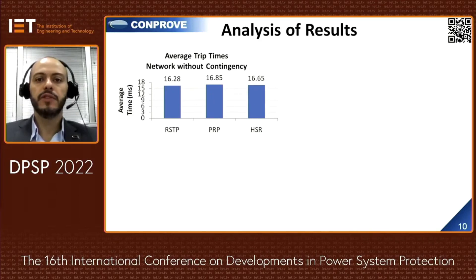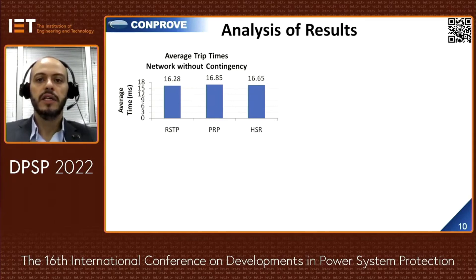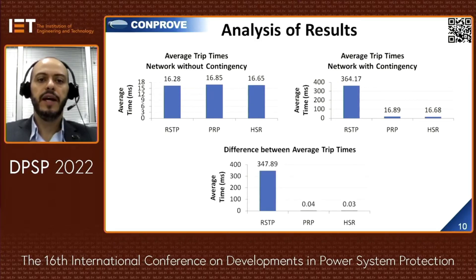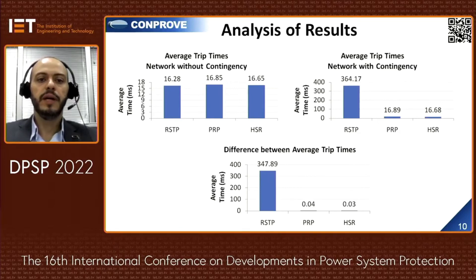The comparative graphics show the average trip times with and without contingencies, comparing the three protocols. On the horizontal axis are the three protocols: RSTP, PRP, and HSR. On the vertical axis is the average trip time. Without contingencies, the times were very close. With contingencies, the RSTP time was very discrepant compared to PRP and HSR. The time difference between network without and with contingencies is very high for RSTP and very low for PRP and HSR.